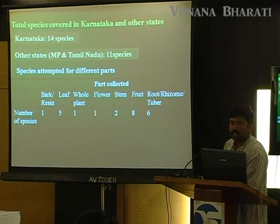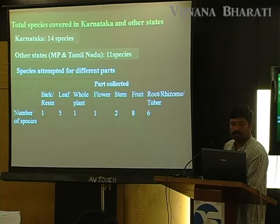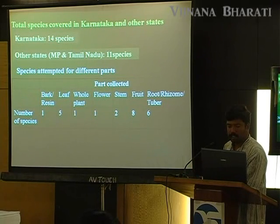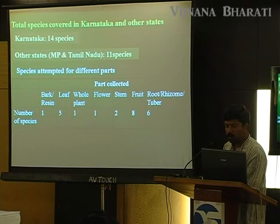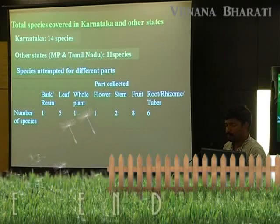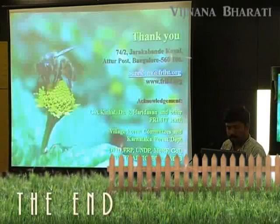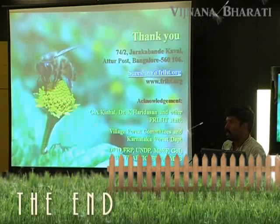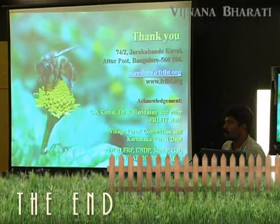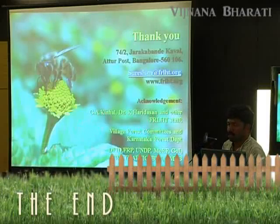In total, the species covered under sustainable harvesting are 14 species in Karnataka and 11 species in other states including Madhya Pradesh and Tamil Nadu. The plant parts attempted: bark — 1 species, leaf — 5 species, whole plant — 1 species, flower — 1 species, stem — 2 species, fruits — 8 species, and root, rhizome, and tuber — 6 species. This is an initial attempt open for further research, and it has been well received.